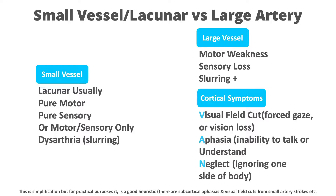So how can you tell what the difference is between large and small vessel strokes? Large vessel strokes have those small vessel symptoms — motor, sensory, and dysarthria — but the key difference is that large vessel strokes also produce VAN symptoms. VAN is the mnemonic for cortical symptoms.